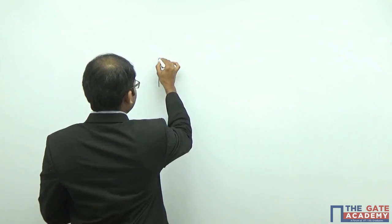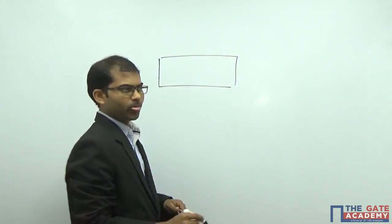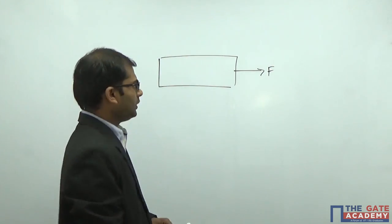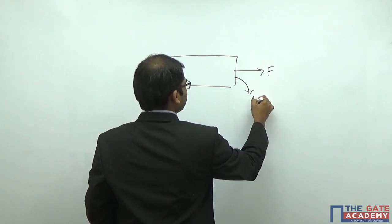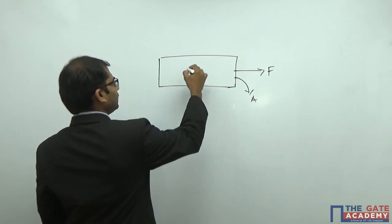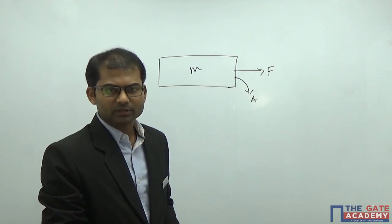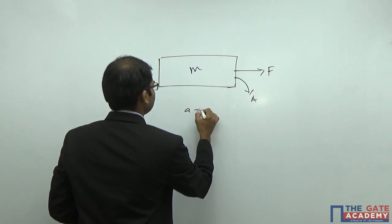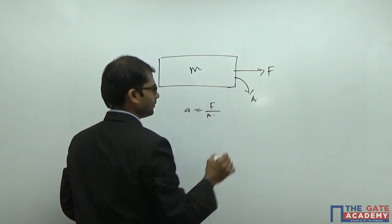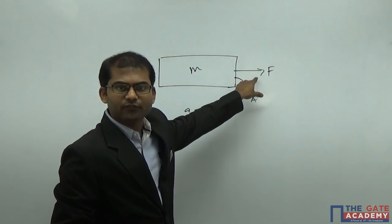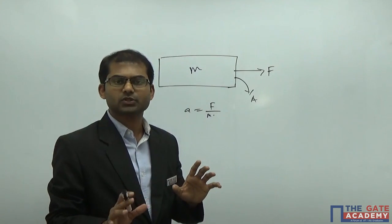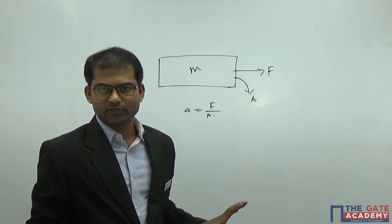Let me explain by drawing a diagram. If a body is experiencing some load F, with area of cross-section A, and mass M, according to Newton's laws of motion, it will start moving with acceleration F/M. In this case, there is an externally applied force but there is no internal resistive force. Hence, stress is equal to zero in this situation.